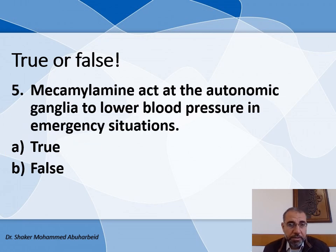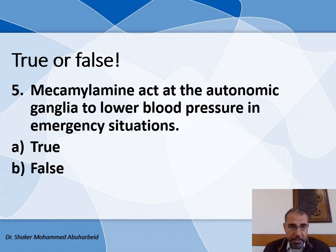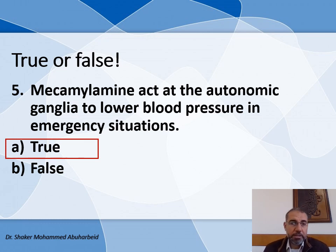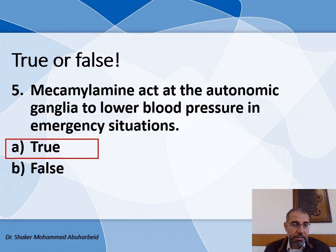Fifth true/false question: Mecamylamine acts at autonomic ganglia to lower blood pressure in emergency situations — this is true. Mecamylamine is very effective at lowering blood pressure in emergency situations.